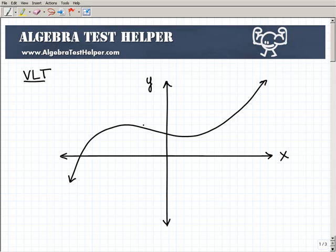But anyways, let's say we have this particular graph, and we want to know whether it represents a function. Well, we can use the vertical line test to figure this out. And all the vertical line test is, it's going to involve a vertical line, which is straight up and down.